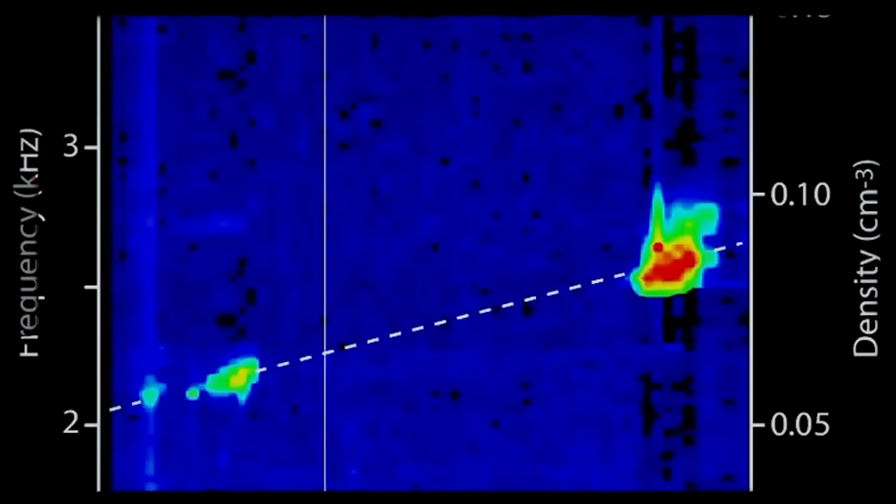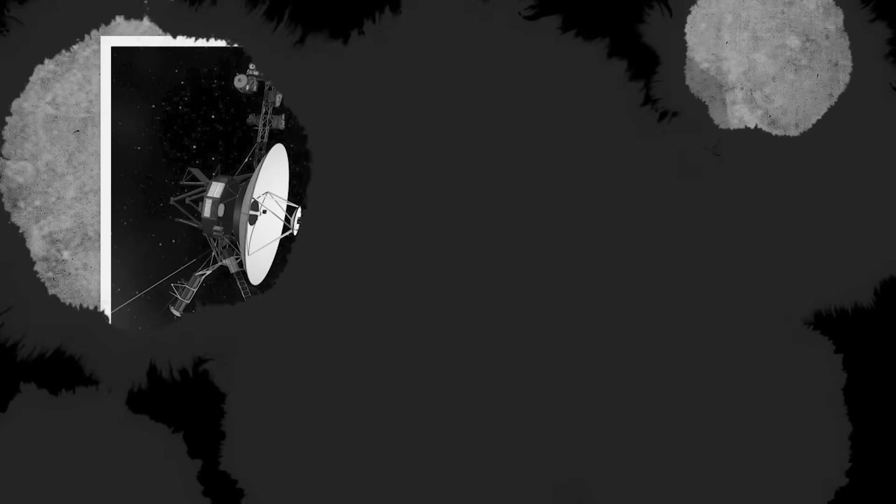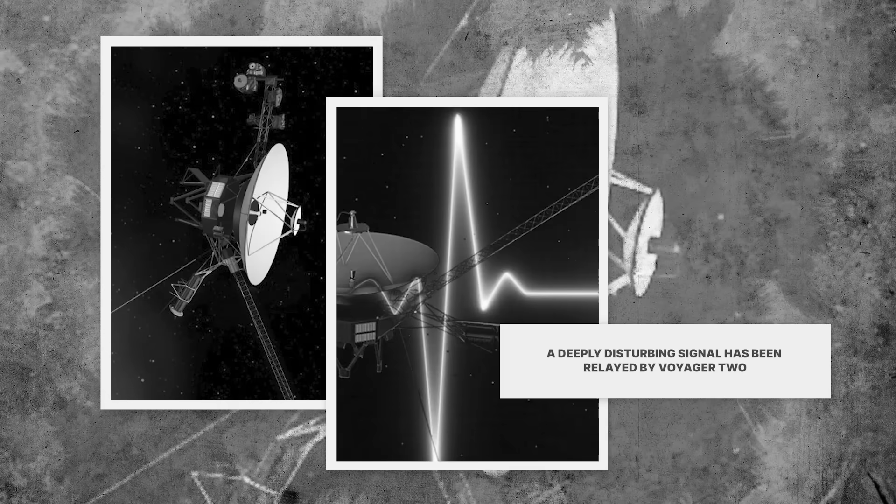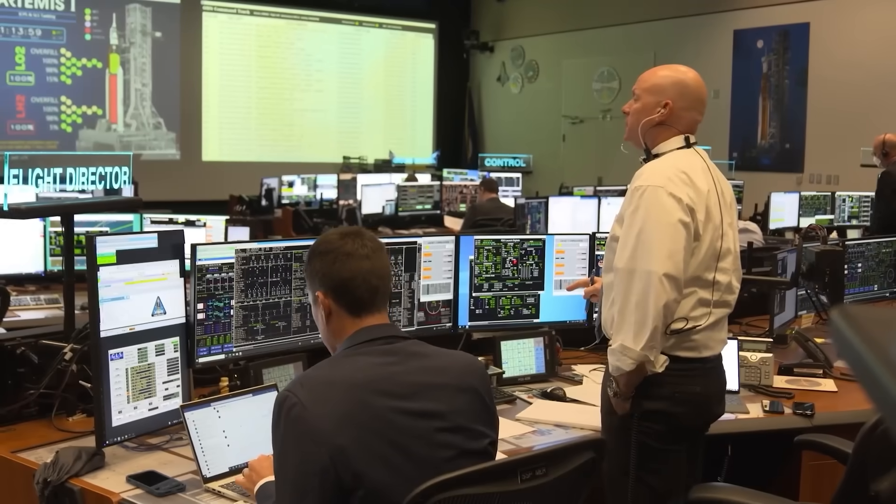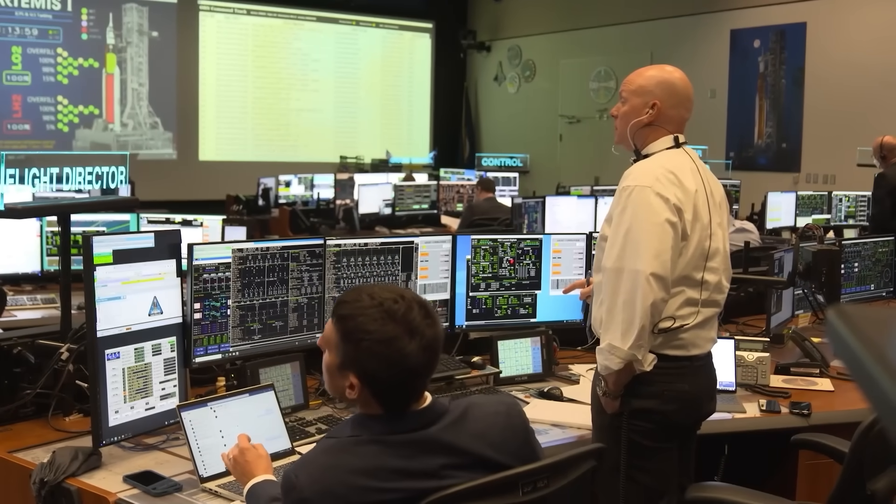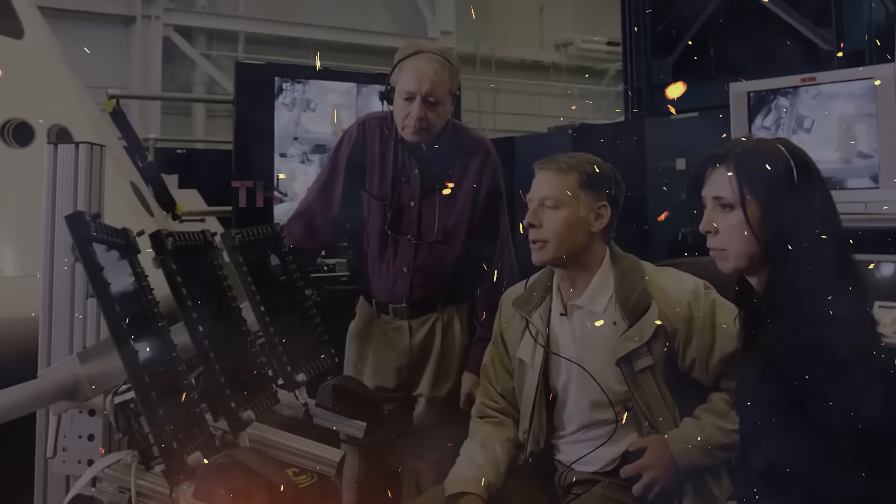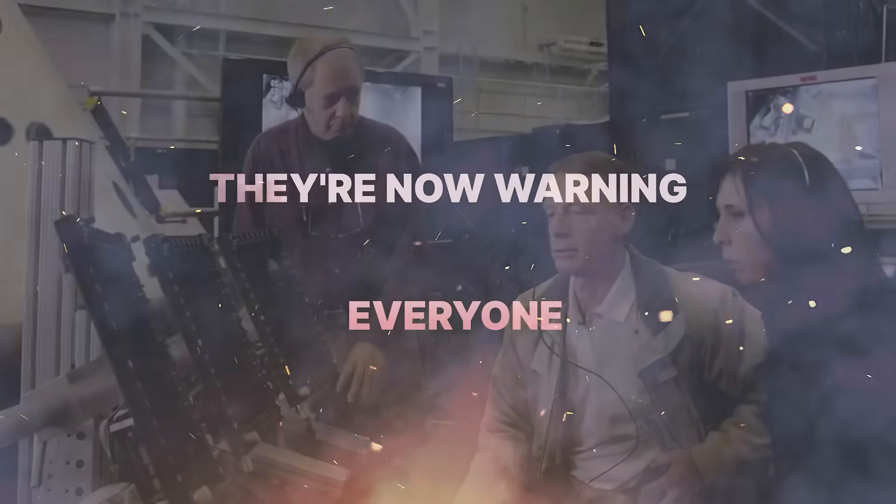Well, it turns out someone did. But they didn't just read the message, they're writing back. A deeply disturbing signal has been relayed by Voyager 2, a pattern so intelligent and bizarre it has sent shockwaves through the scientific community. They're now warning everyone that this isn't the friendly greeting we hoped for. To put it mildly, our bottle has been returned with a warning inside.